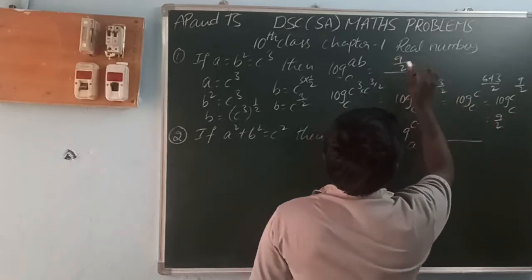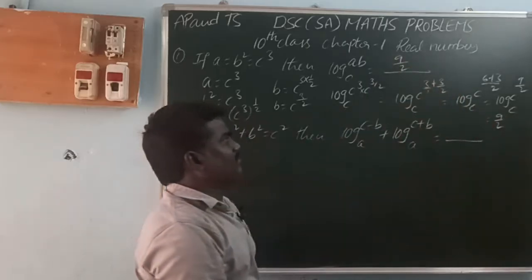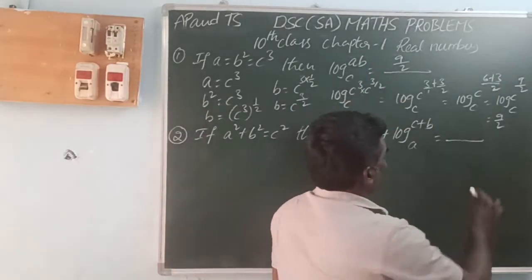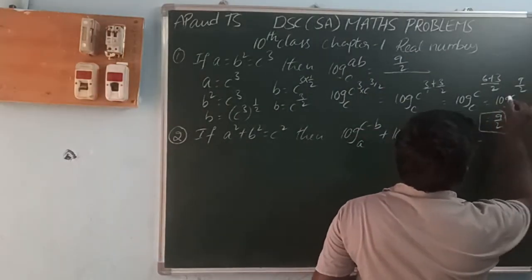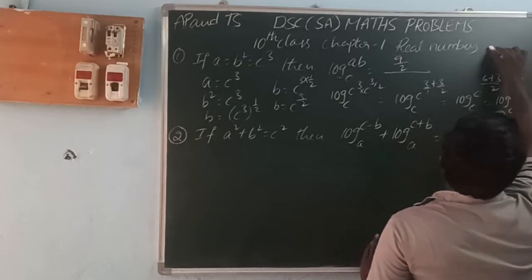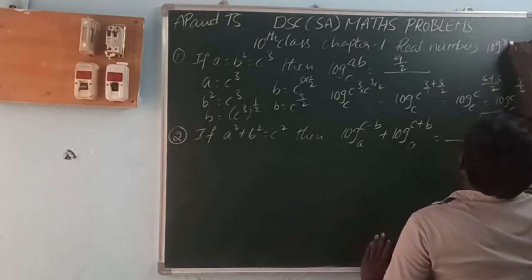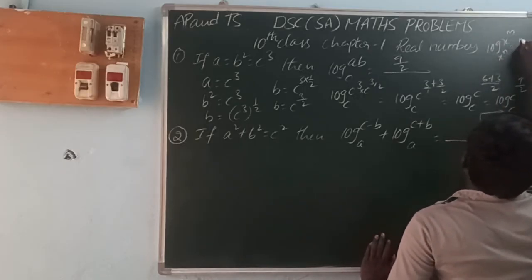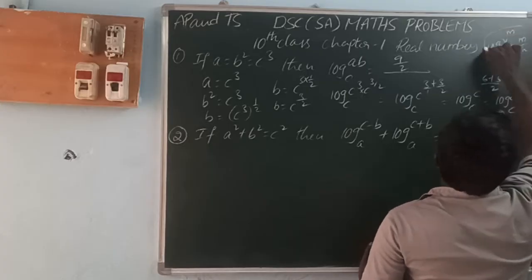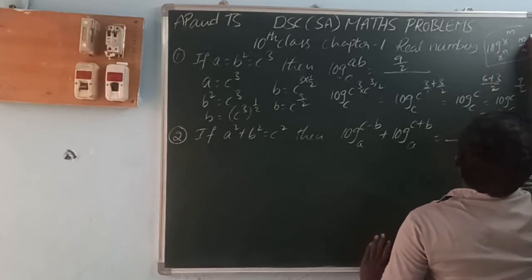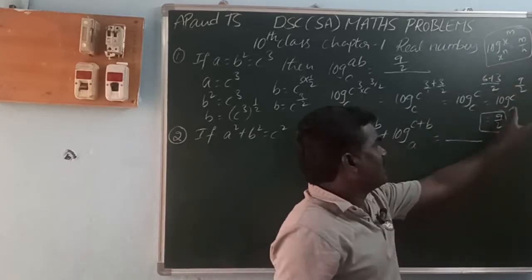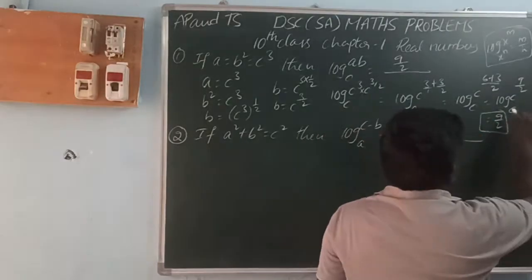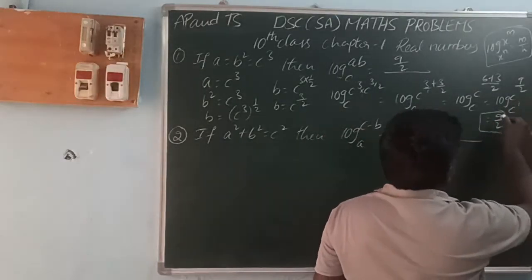So log(ab) base c its value is 9/2. Here we use the formula: log x power m base x power n equals m by n. So log c to the power 9/2 base c we can write as 9/2. This formula is very useful for these problems.